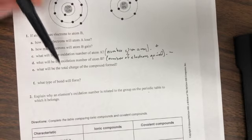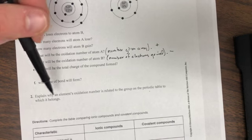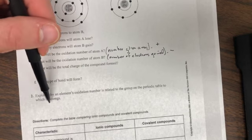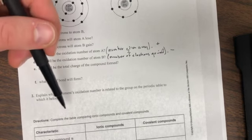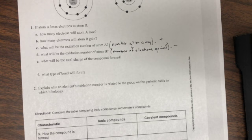Explain why an element's oxidation number is related to the group on the periodic table to which it belongs. Remember, everything in group one has an oxidation number of plus one, everything in group two has an oxidation number of plus two. Then you skip all the transition elements, and then thirteen is plus three, fourteen is plus or minus four, fifteen now we start counting down - fifteen is minus three, sixteen minus two, seventeen is minus one, eighteen is zero. Explain that.